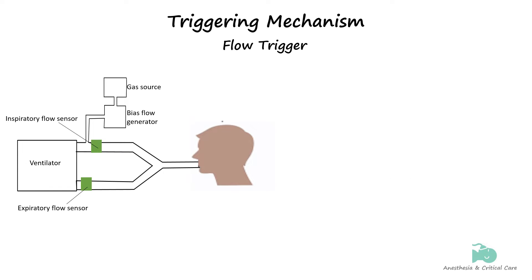The flow trigger is the most commonly used form of triggering for spontaneous modes of ventilation. It works by setting a continuous background flow of gas through the ventilator circuit even during expiration, called bias flow. During spontaneous breathing, inspiratory effort diverts some of this background flow away from the circuit to the patient, resulting in decreased background flow exiting the ventilator, which is sensed by the expiratory flow sensor. The difference between the flow rate sensed by inspiratory and expiratory sensors triggers an assisted breath.